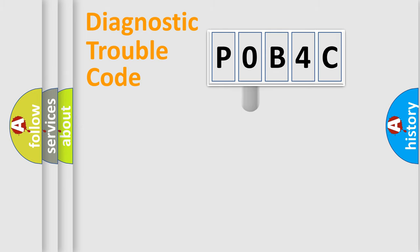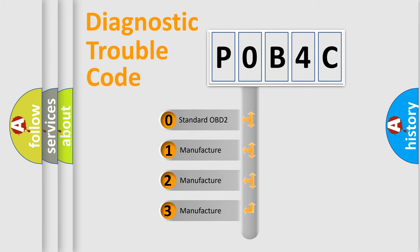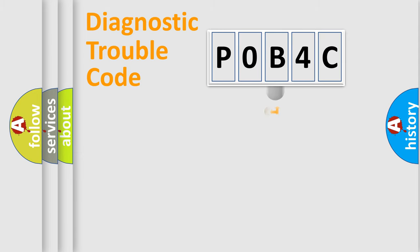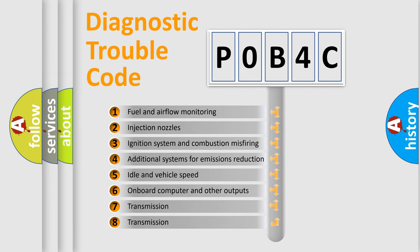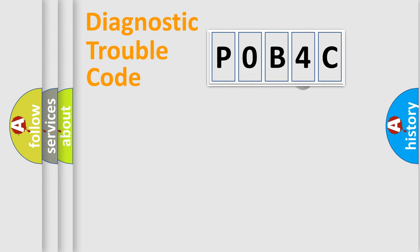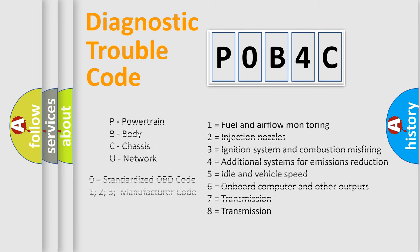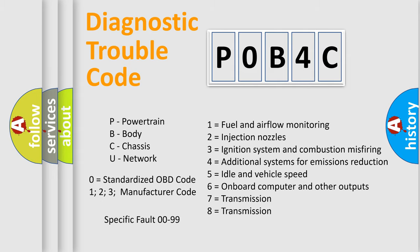This distribution is defined in the first character of the code. If the second character is expressed as zero, it is a standardized error. In the case of numbers 1, 2, or 3, it is a more specific expression of a car-specific error. The third character specifies a subset of errors. The distribution shown is valid only for the standardized DTC code. Only the last two characters define the specific fault of the group. This division is valid only if the second character code is expressed by the number zero.